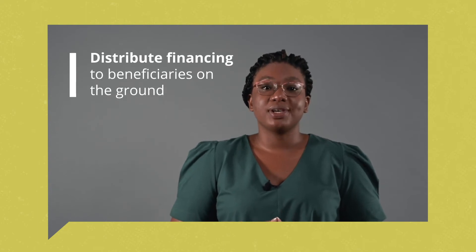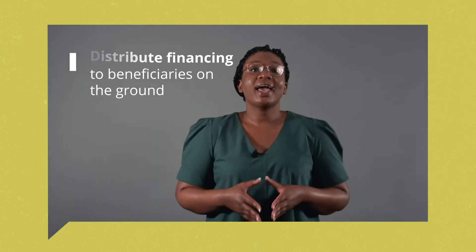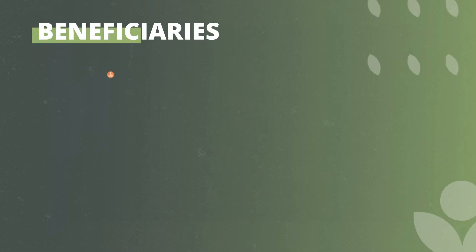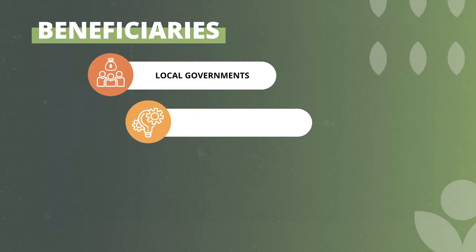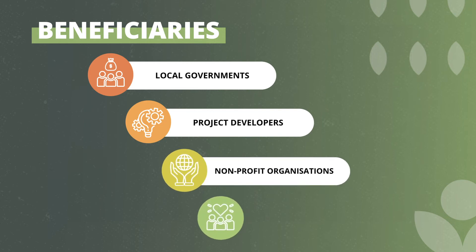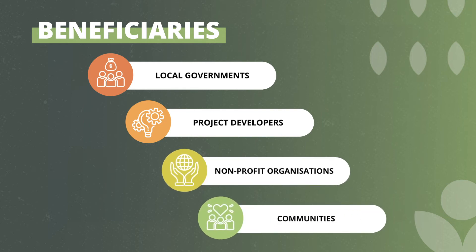Financial intermediaries then distribute financing to beneficiaries on the ground. If successful in their proposal bids, beneficiaries are able to undertake specific projects or activities associated with climate change adaptation and mitigation. In addition to local governments and project developers, nonprofit organizations and communities are also implementers of climate finance. The work carried out by these groups ultimately benefits citizens and vulnerable groups. Let's look at a South African example of this flow of money.